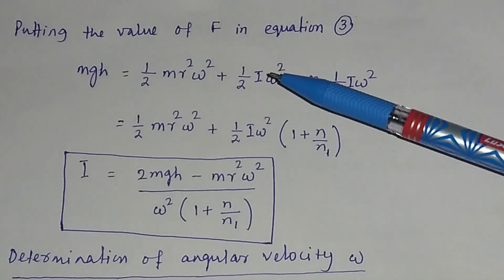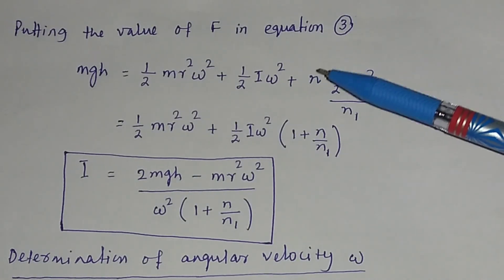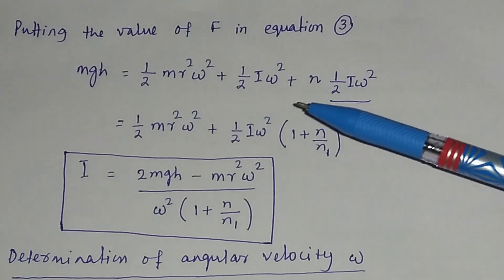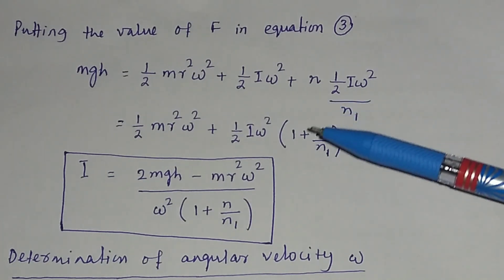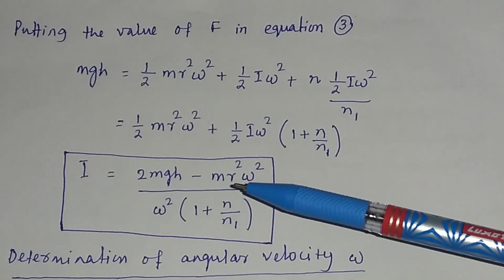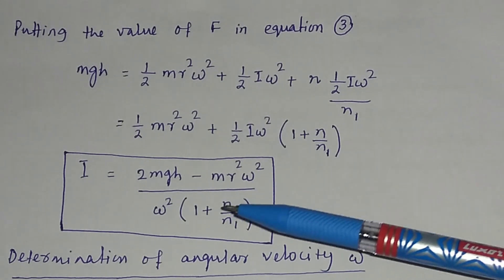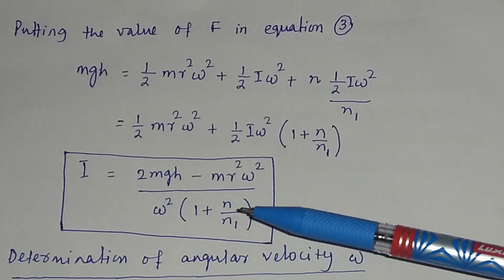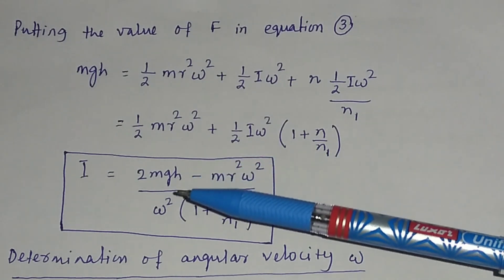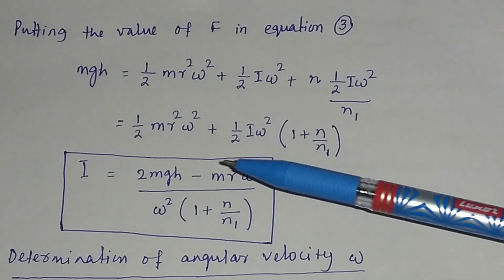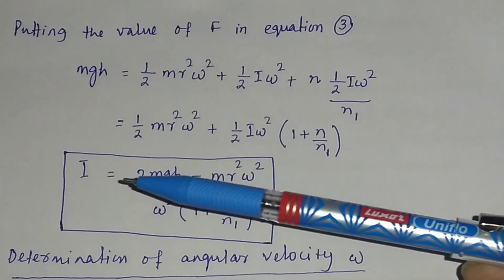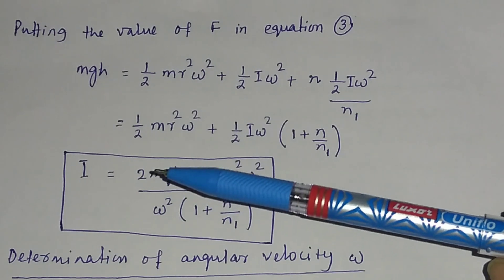Substituting the value of f into equation 3 and solving, the moment of inertia is: I = (2mgh − mr²ω²) / (ω² × (1 + n/n1)). By putting in the measured values, you can calculate I, the moment of inertia of the flywheel, where m is the mass used.